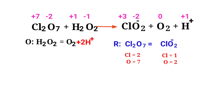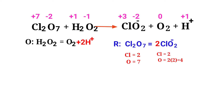Now balance the number of atoms in the reduction half-reaction. To balance the chlorine atoms, we need to put a coefficient of 2 in front of ClO₂. The chlorine atoms are now balanced. To balance the oxygen atoms, you can produce water molecules.